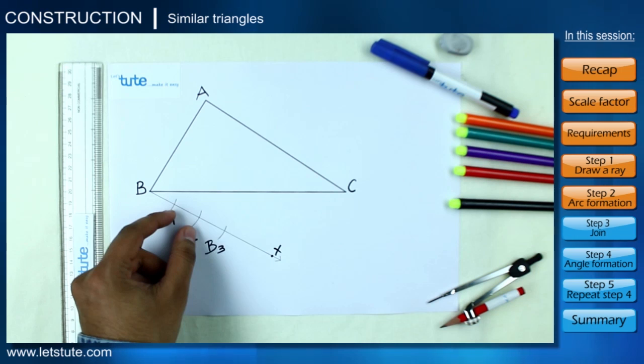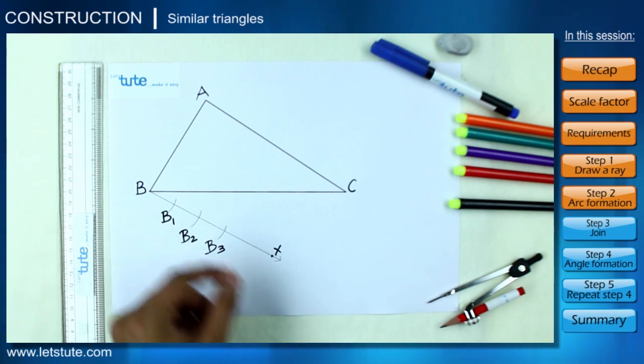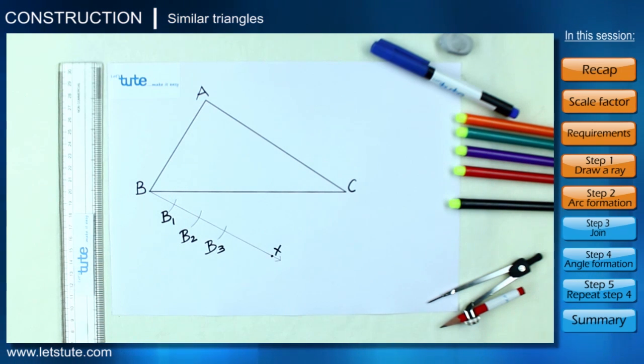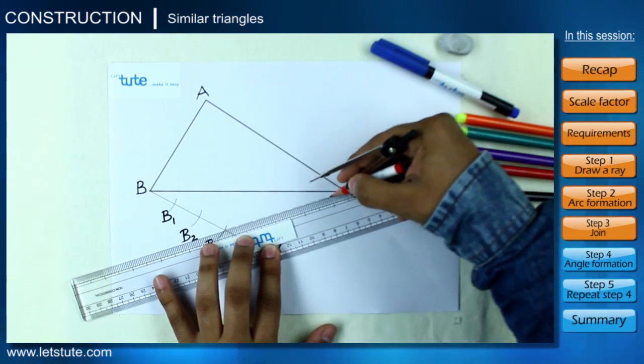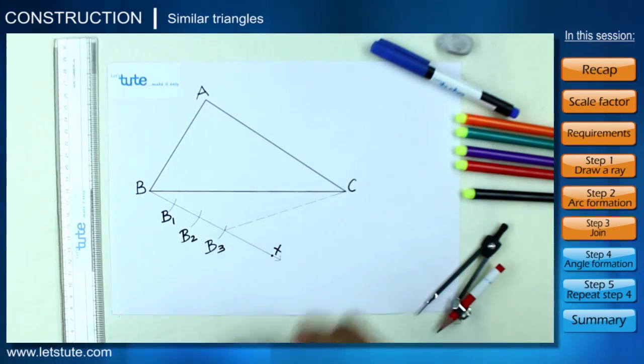Now step 3 is to join B3 with the vertex C, so we'll get a line segment B3C. Since we want to isolate two equal parts, we should even draw a similar line segment from the point B2.